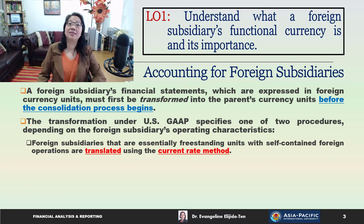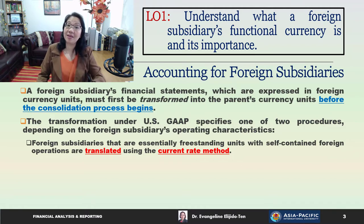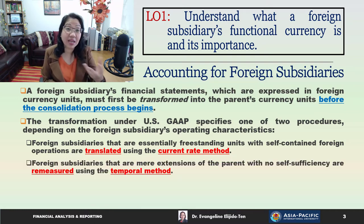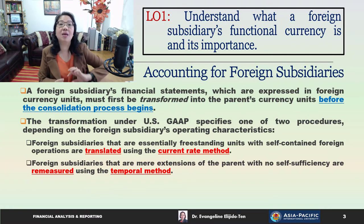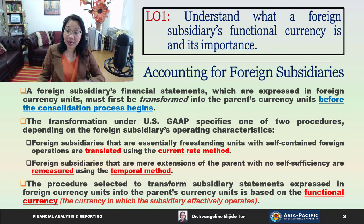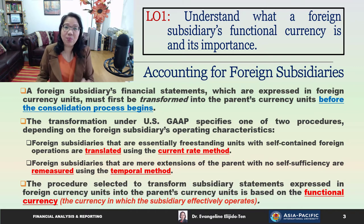The first method is known as the current rate method. Foreign subsidiaries that are essentially freestanding units with self-contained foreign operations are translated using the current rate method. On the other hand, foreign subsidiaries that are mere extensions of the parent and have no self-sufficiency will be remeasured using the temporal method. The procedure selected is based on the functional currency — the currency in which the subsidiary effectively operates.